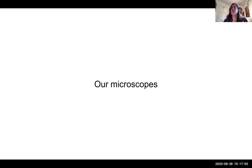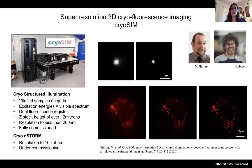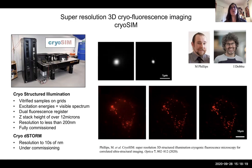Now I'll start with the fluorescence imaging, specifically the cryoSIM — that's structured illumination microscopy. It looks into vitrified samples on grids and has a wide spectrum of illumination. We can register two fluorescence signals at the same time, and we look through cells with a Z-stack of about 12 microns or more — really thick for this type of sample. With a resolution of better than 200 nanometers, this is fully commissioned and easily accessible. The cryo-dSTORM functionality is there but still under development, so slightly higher risk.